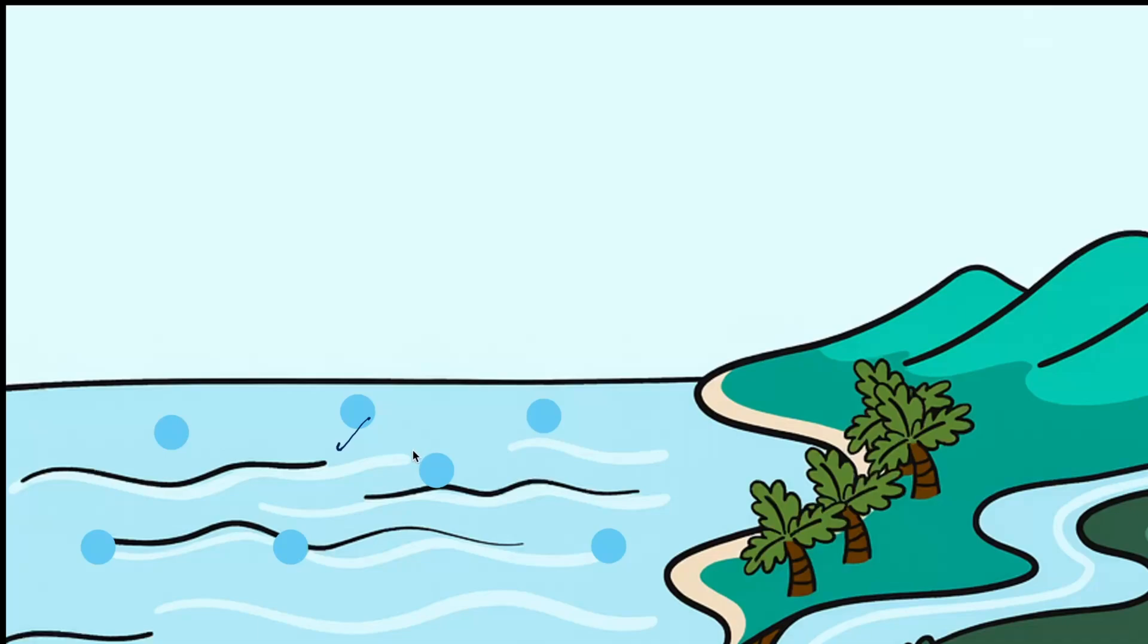Now because water vapour is lighter than air, it rises up into the sky. This water vapour keeps reaching higher up in the atmosphere. And once it reaches higher layers of the atmosphere, the air here is much cooler when compared to the surface.